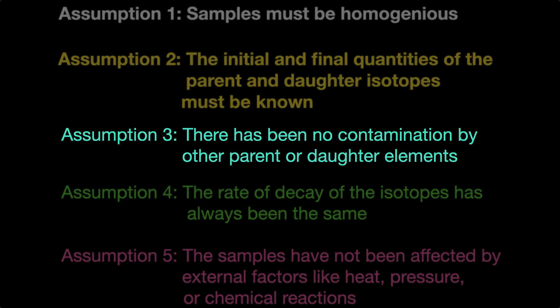Assumption three: there's been no contamination by other parent or daughter elements. But not only do uranium and lead migrate, as Fowle pointed out, but some elements important for dating, like argon, move very quickly and easily. Again, believers find ways to convince themselves that they have the problem under control.